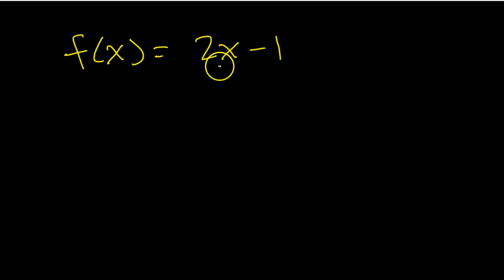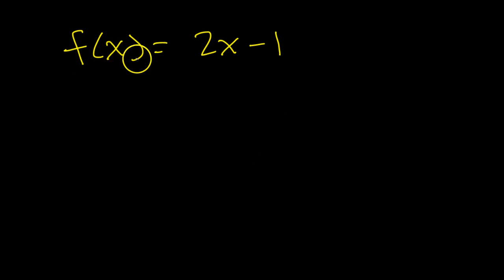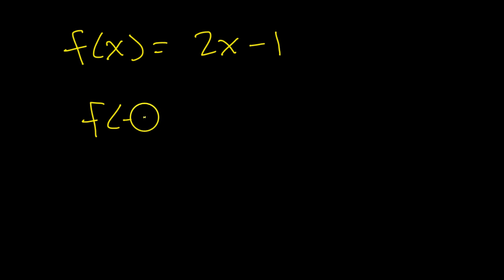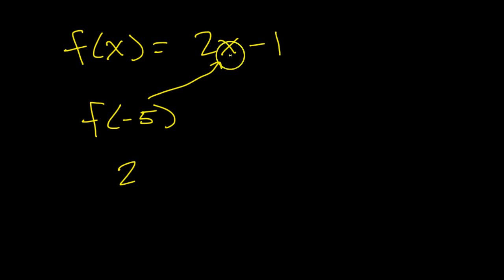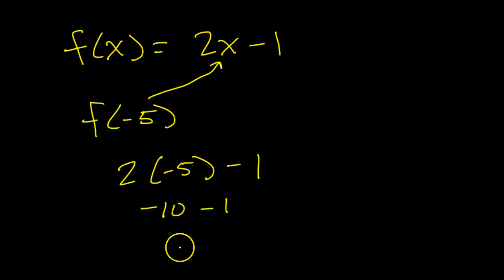Let's think back to the simple functions of the past. When we had a function like f of x equals 2x minus 1 and we saw f of negative 5, we were supposed to evaluate this. This meant take negative 5 and plug it in for x and see what you get. So we would have 2 times negative 5 minus 1, which is negative 10 minus 1, so the answer would be negative 11.